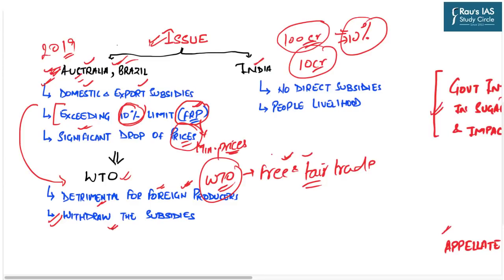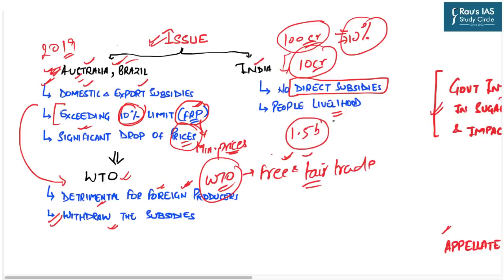The WTO ruled that India should withdraw the alleged subsidies given to sugarcane farmers. However, India provided two arguments in the dispute settlement body: first, that the 10% rule applies only to direct subsidies and India does not provide direct subsidies — the subsidies are indirect in nature. Second, that around 5 crore people are dependent on sugarcane and India must give subsidies to protect livelihoods and ensure national food security. However, the WTO dispute settlement body was not convinced and ruled against India.